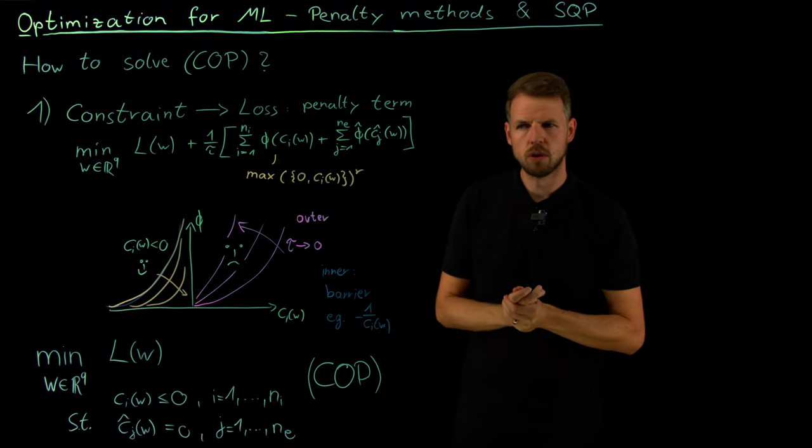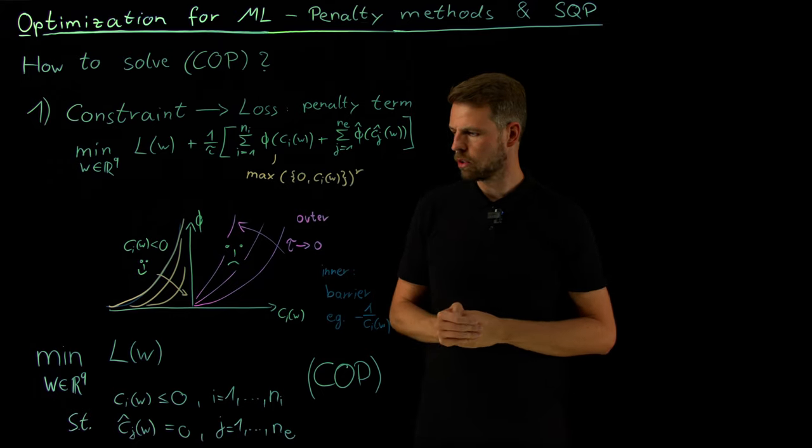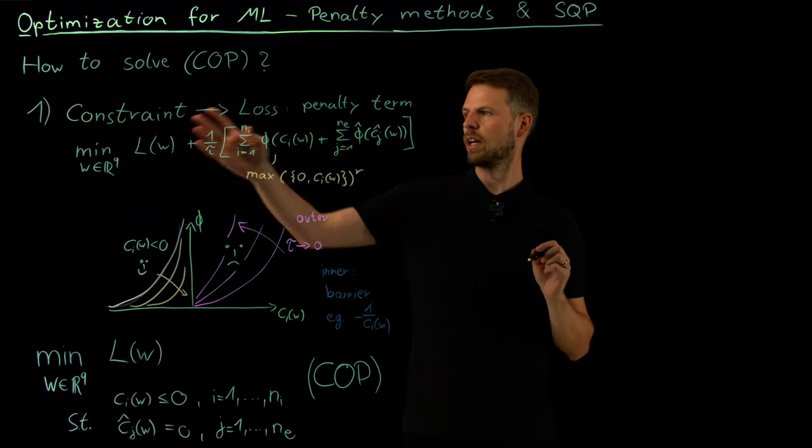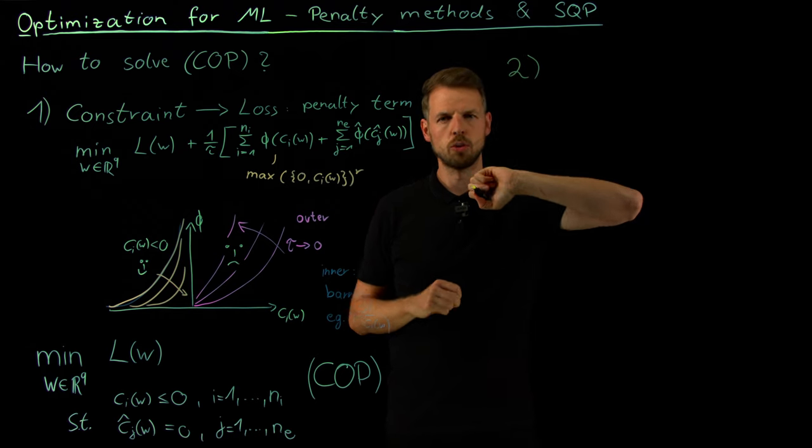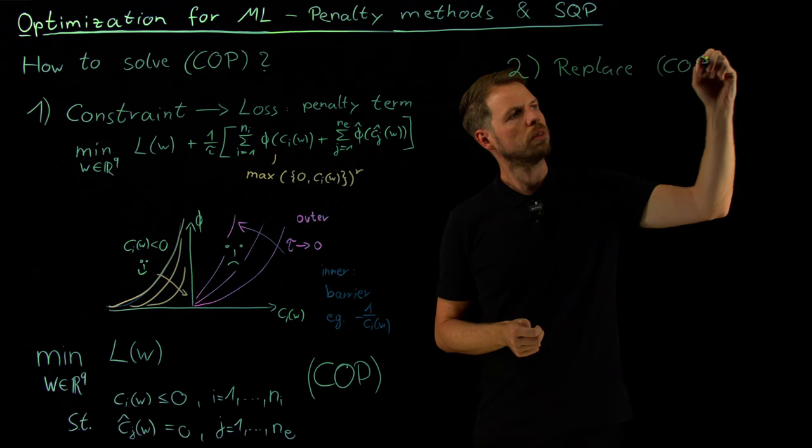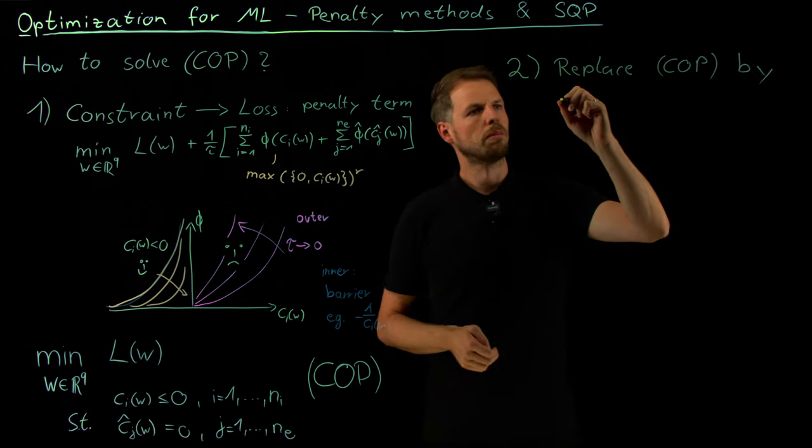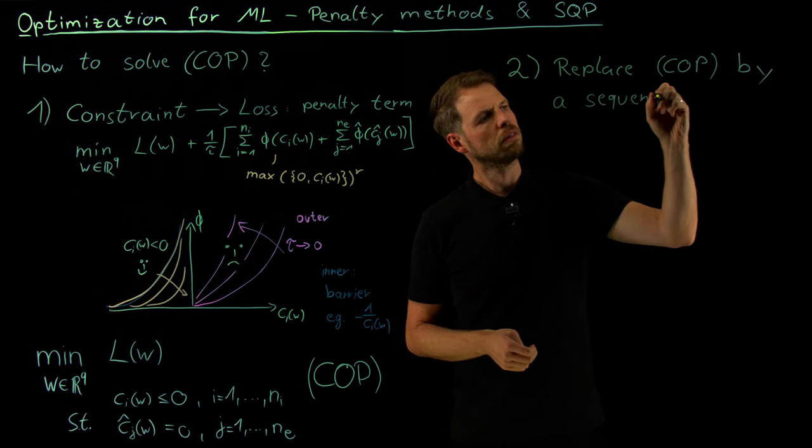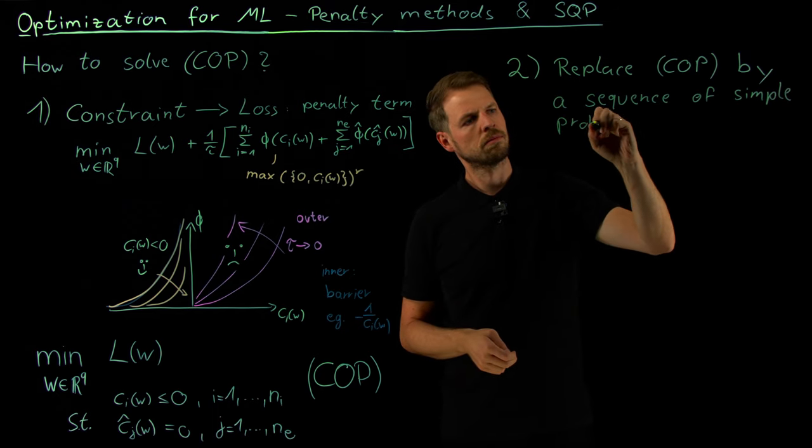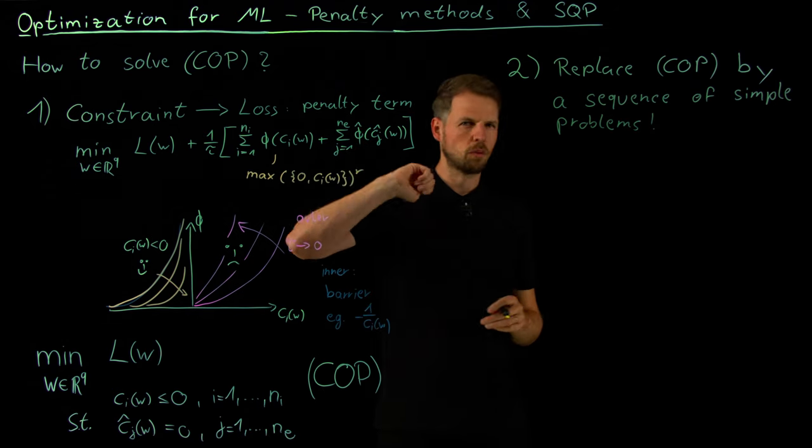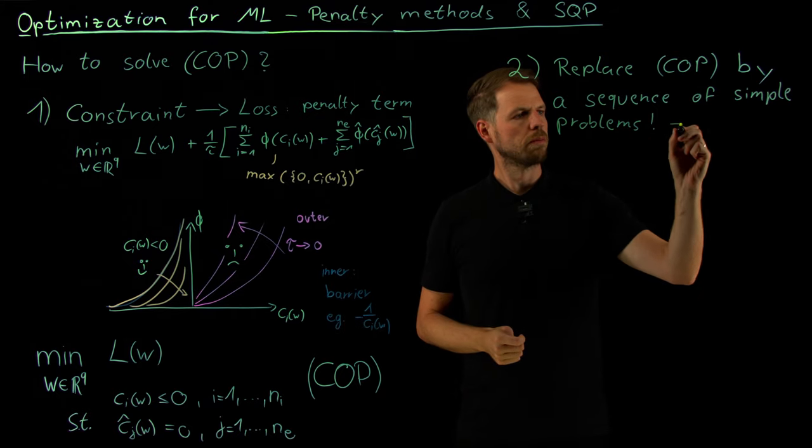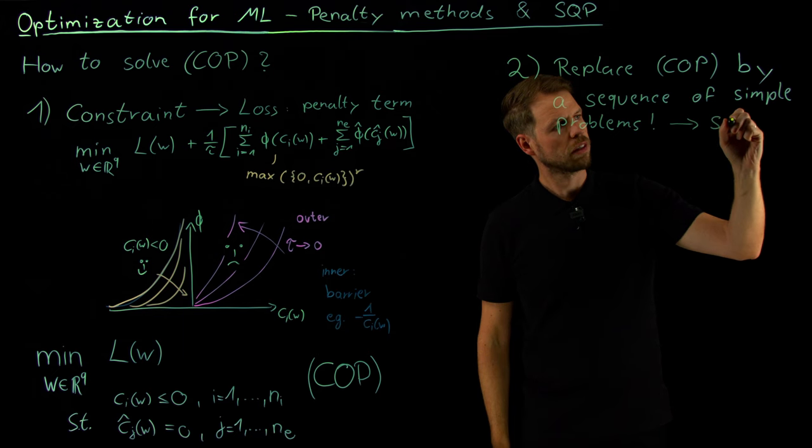So this brings us to part number two. We set penalty methods. So constraint into loss. Now there's a second strategy that we can follow. Let's say we do not want to go this way. Maybe constraints are more important. Another thing that one can do and which is also a very common strategy is to simplify your problem. Here we had constraints go into loss function. What we are going to do now in problem number two or strategy number two is to replace our constraint optimization problem by simpler problems. But not by a single one but by a sequence of simpler problems.